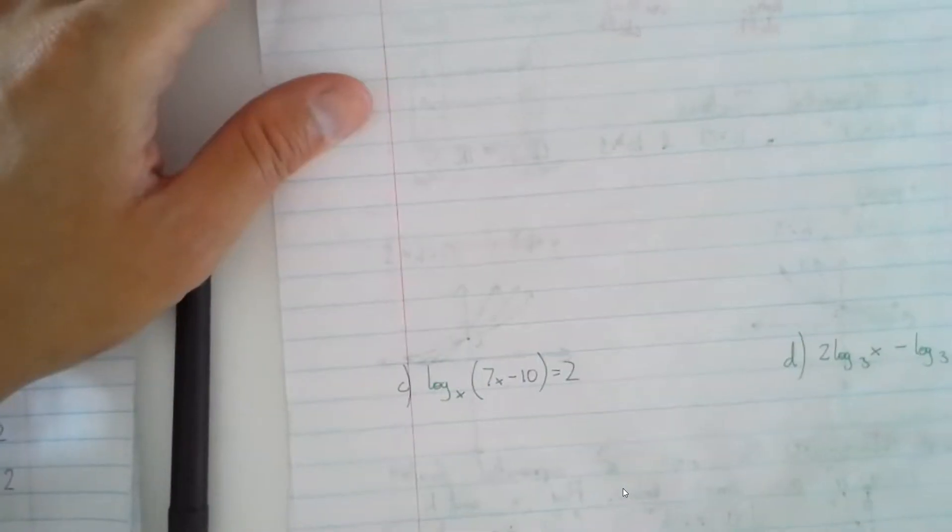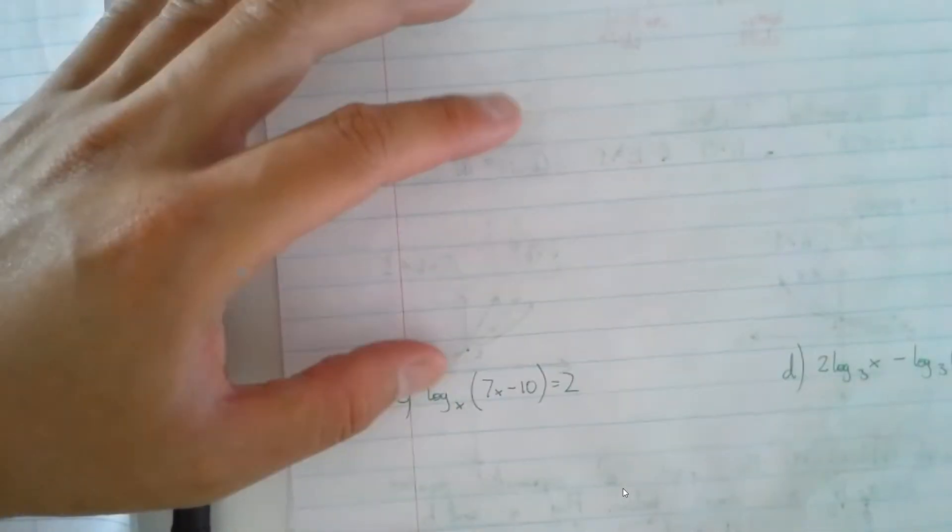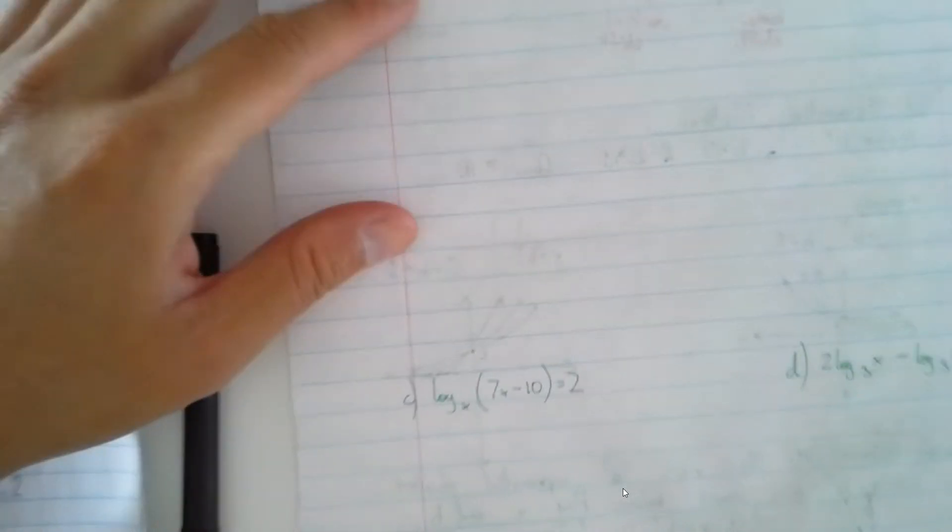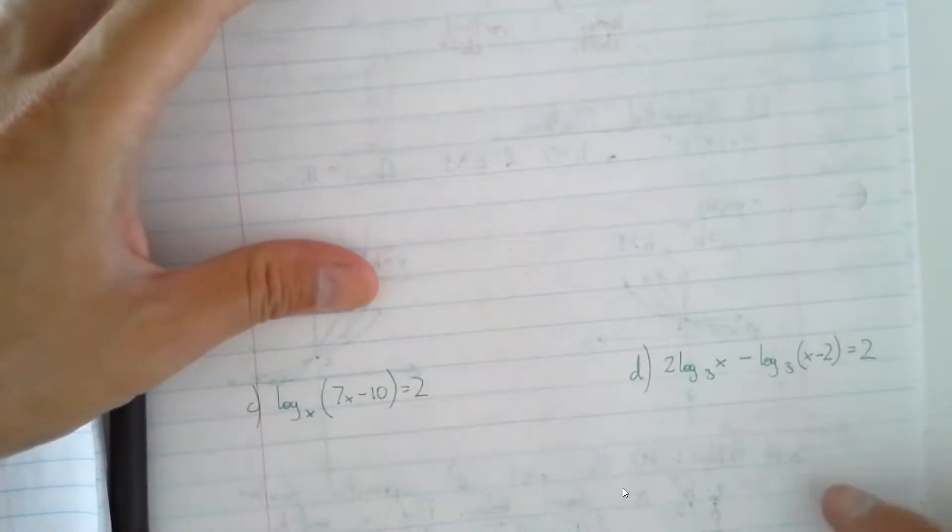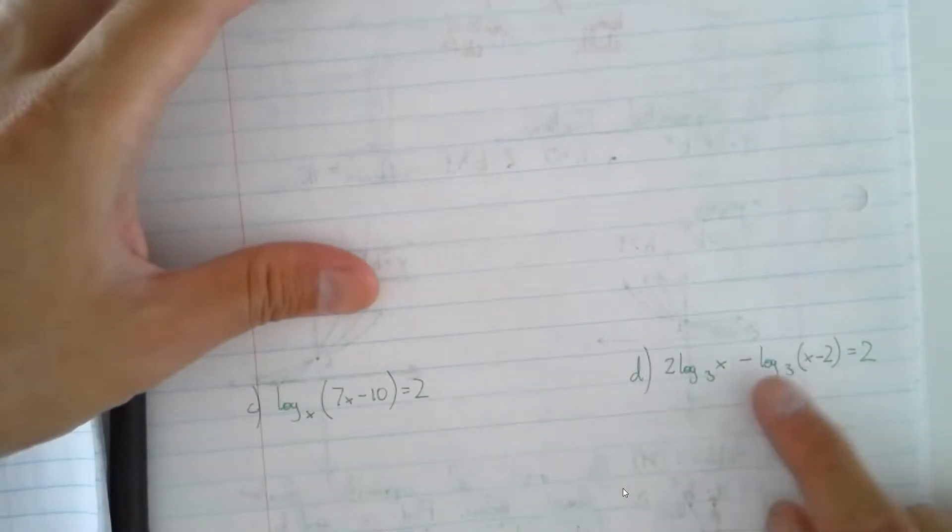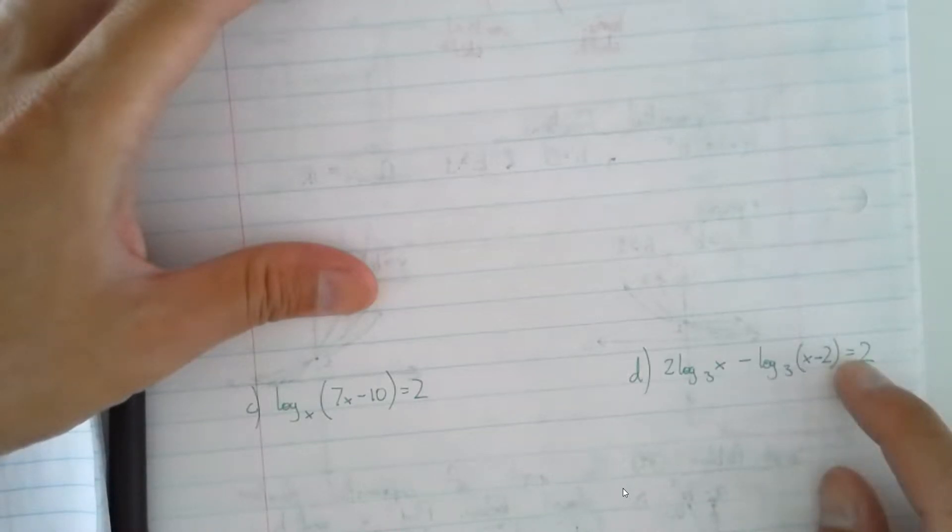And then down here is log base x of 7x minus 10 equals 2. That's interesting. That's not actually equal to a variable, so that should give you a clue on how to work with that. And this over here is 2 log base 3x minus log base 3 of x minus 2 equals 2. You're going to have to solve for x on all of these.